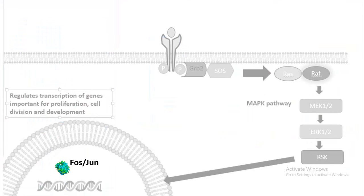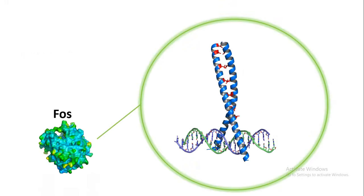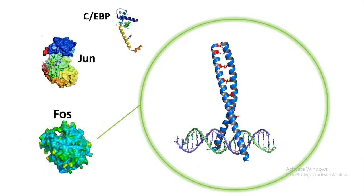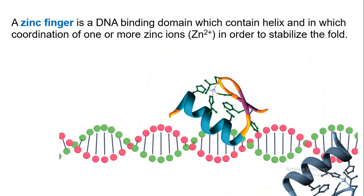Examples of the leucine zipper motif are Fos and Jun. Fos and Jun are transcription factors activated by the MAP kinase signaling pathway. Fos, Jun, and C/EBP all have the same leucine zipper DNA binding motif, and thereby they interact with specific AP1 family transcription factor binding regions.